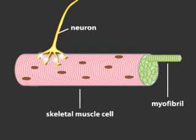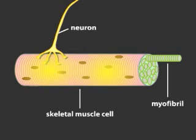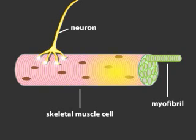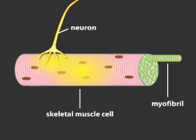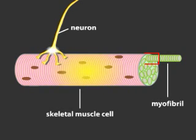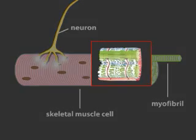When a neuron stimulates a muscle cell, an action potential sweeps over the plasma membrane of the muscle cell. The action potential releases internal stores of calcium that flow through the muscle cell and trigger a contraction.